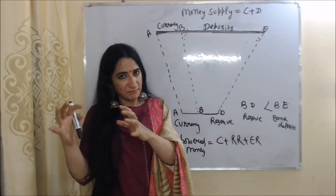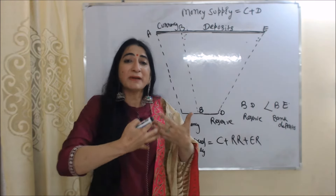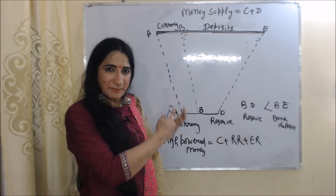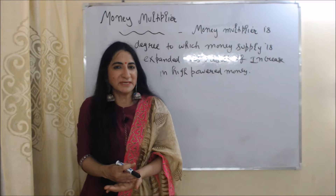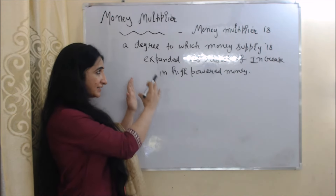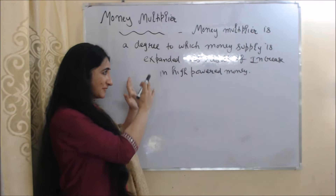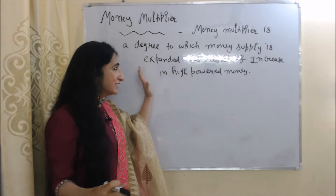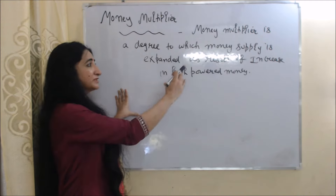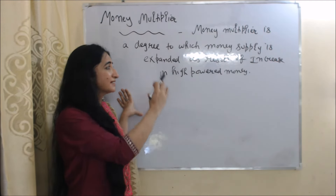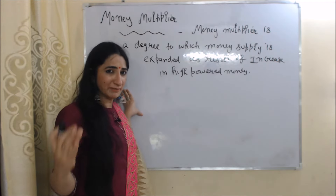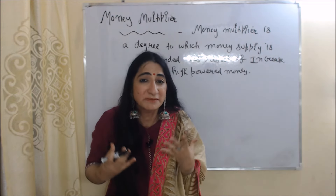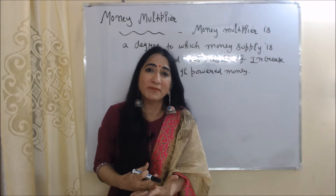So high powered money is our money base. When banks expand this money by the process of credit creation, it is called money supply. Money multiplier is the degree to which money supply is expanded as a result of an increase in high powered money. In other words, because of high powered money, how much money supply increases is called the money multiplier.